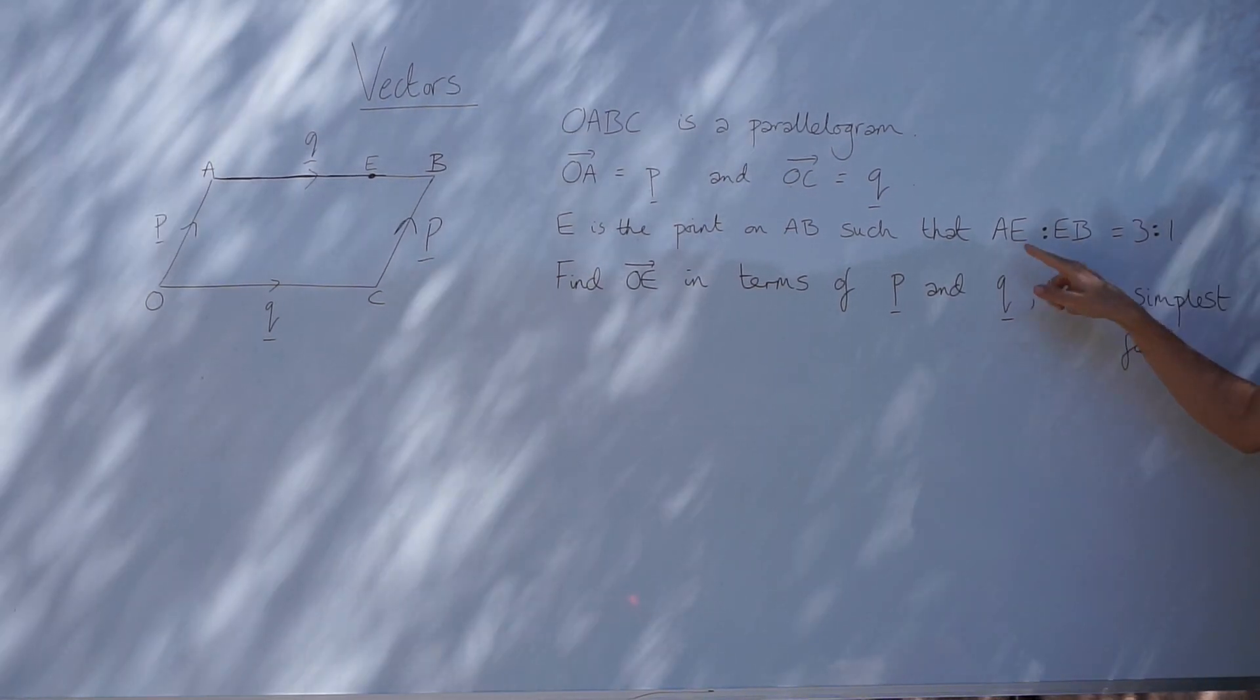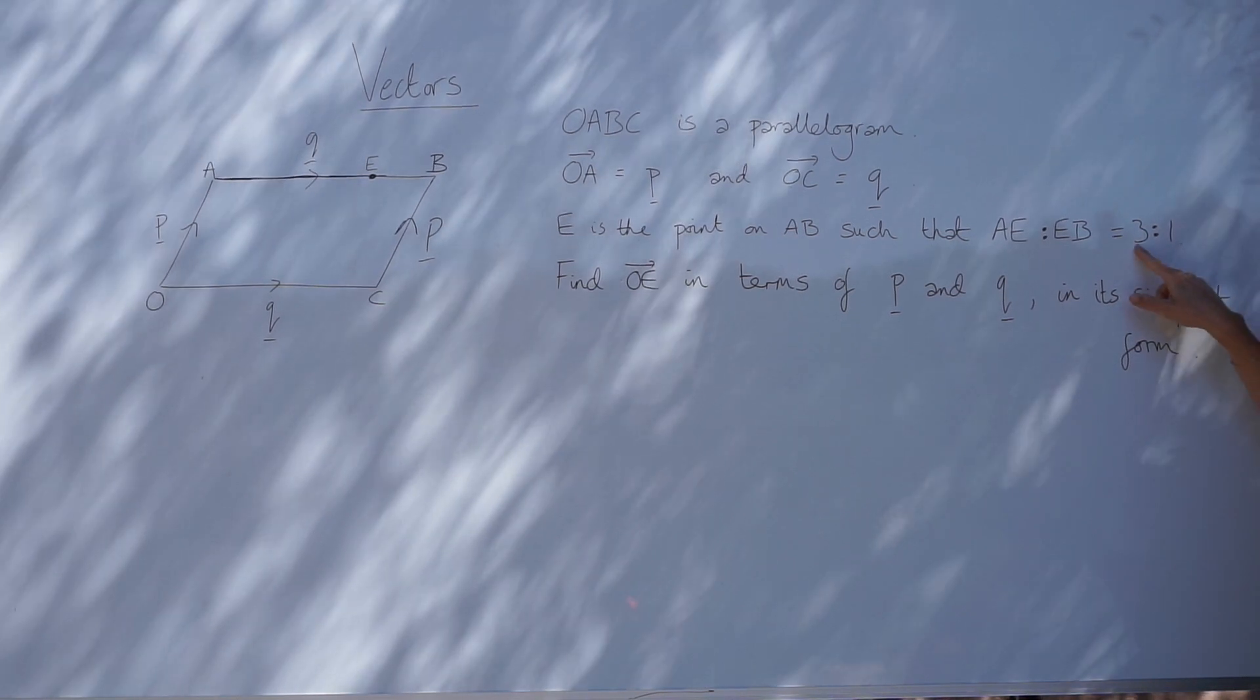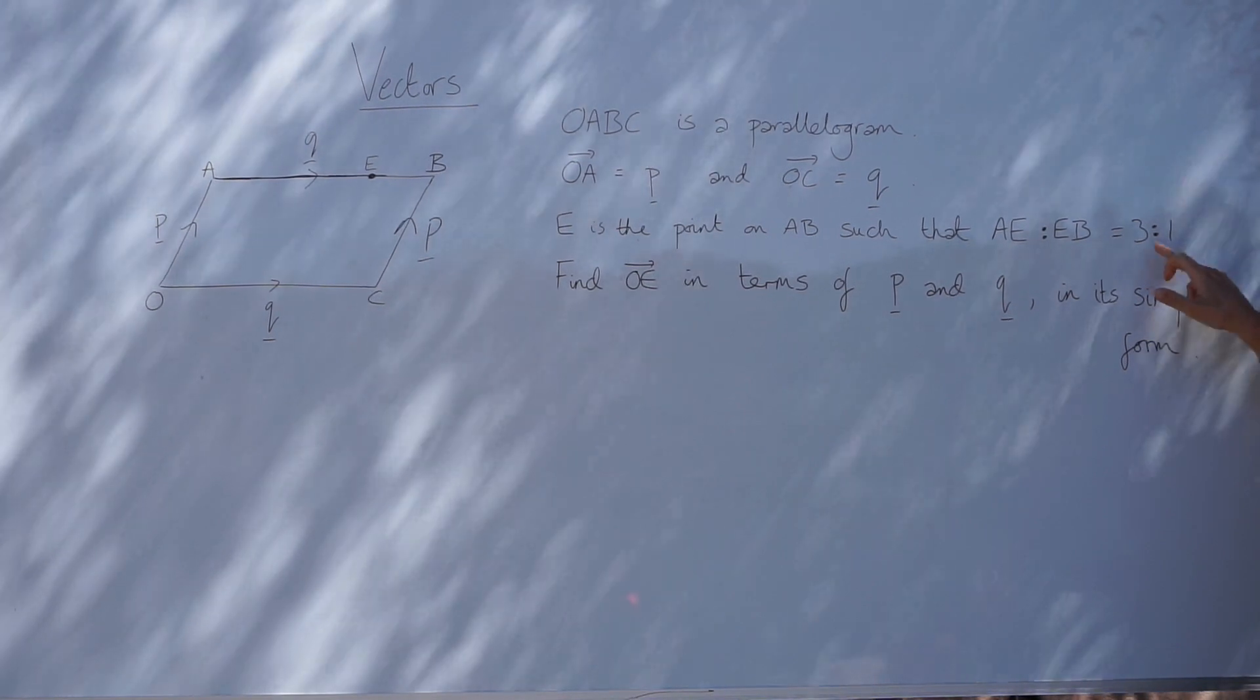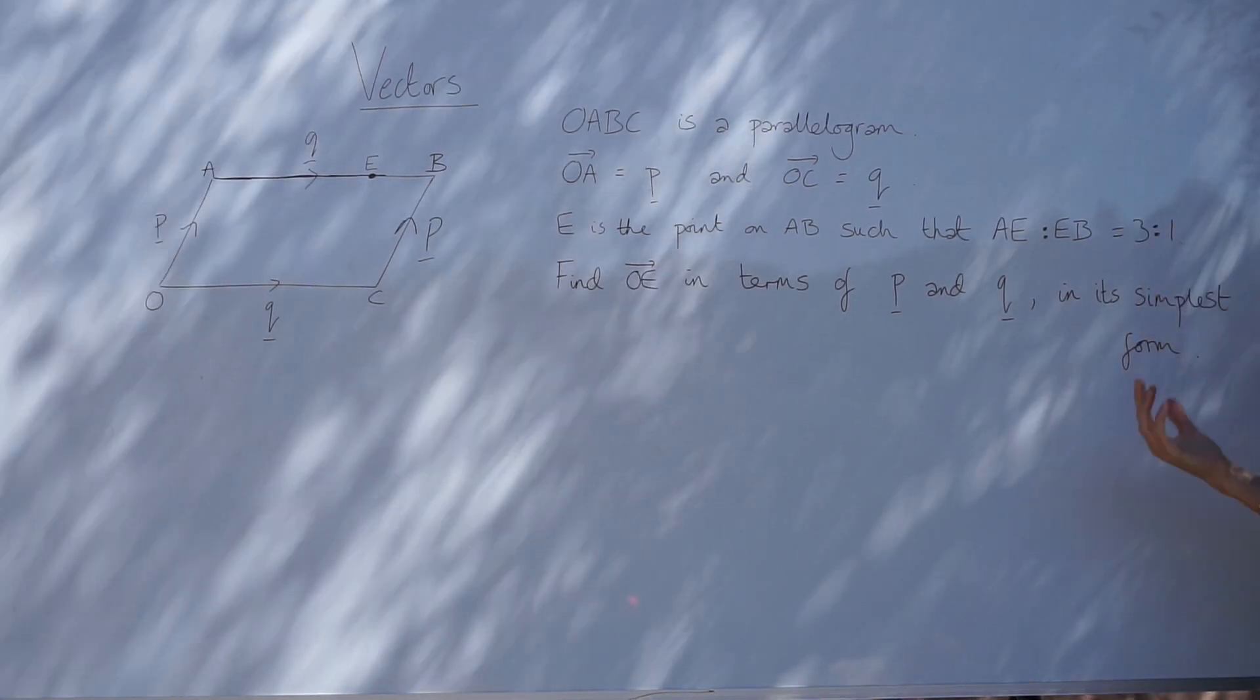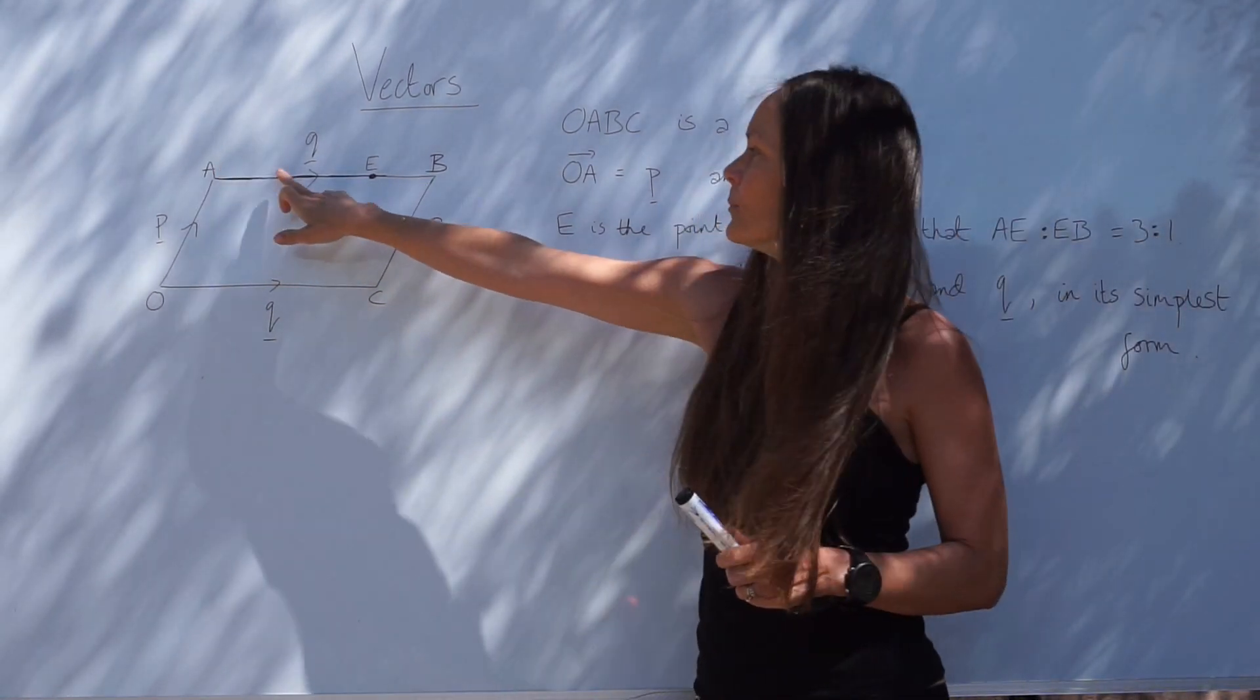All that means is the distance between A and E is made up of three equal parts, and the distance between E and B is just one part. So there are four parts altogether along the line AB. So here's the line AB.